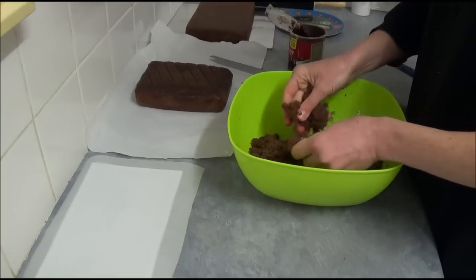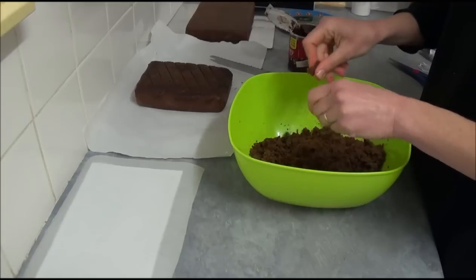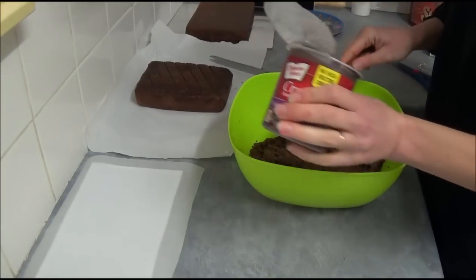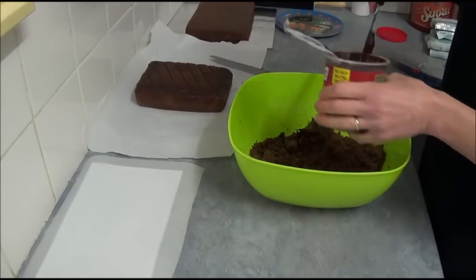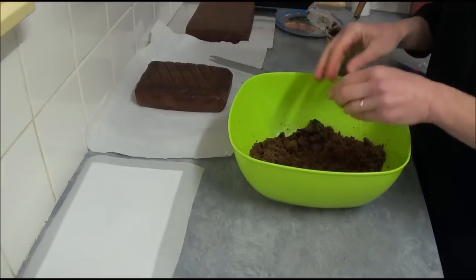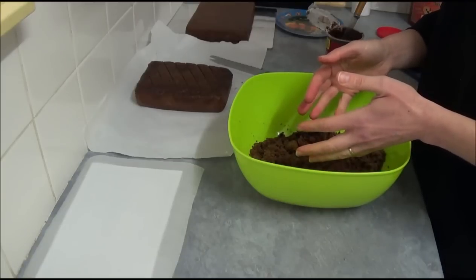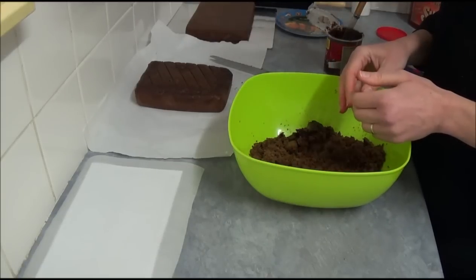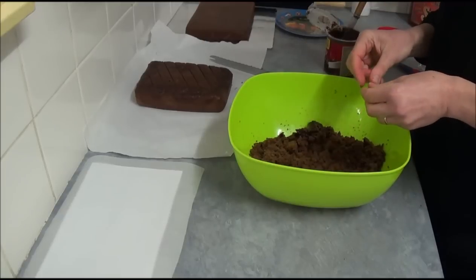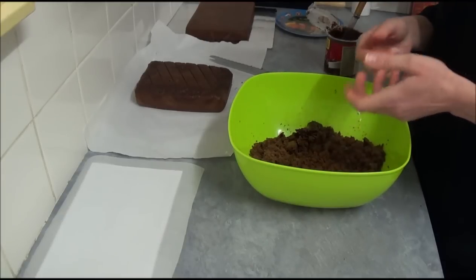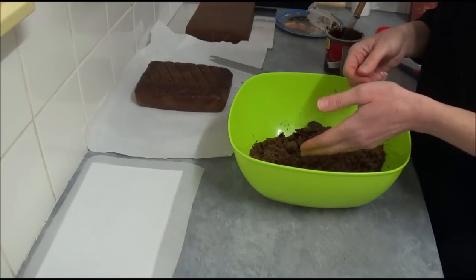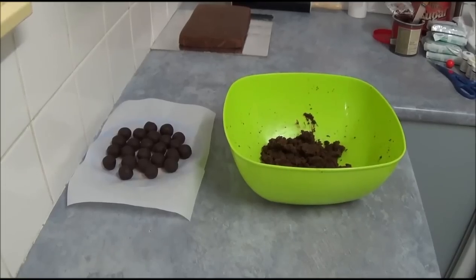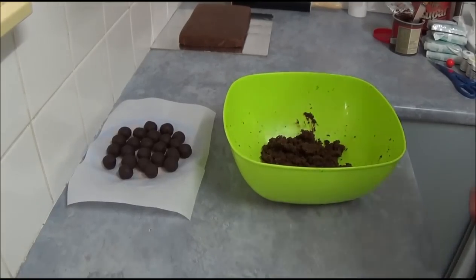Once we crumble up all our mixture, as you can see it's nice and crumbled. We add frosting, not too much, to make sure we try to bond our mixture together. If it's not enough and it's still falling apart, just add a little bit more frosting. Sometimes you can use cream cheese as well, but it just depends on which kind of cake you're actually making.